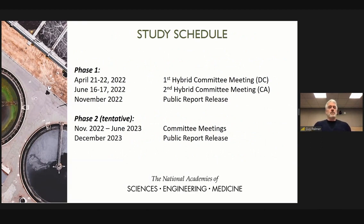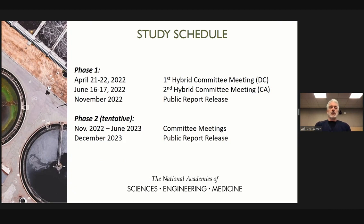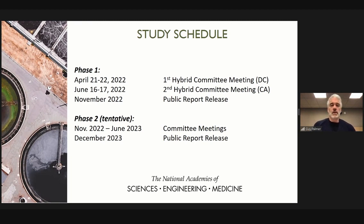The study schedule for phase one: this is the first hybrid committee meeting; we'll have a second hybrid committee meeting in June, with a goal of compiling the report in October, a public report release in November, and then progress to phase two, which is tentative.